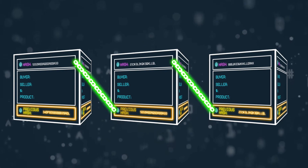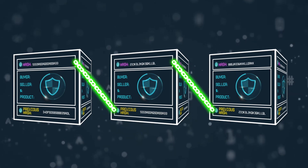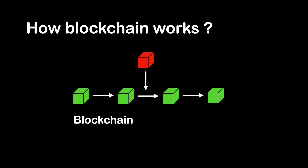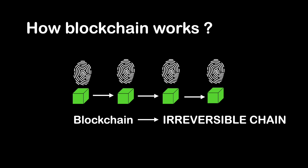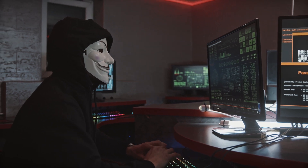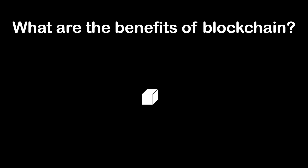As assets move from place to place or ownership changes hands, the blocks confirm the exact time and sequence of transactions. The blocks link securely together to prevent any block from being altered or inserted between two existing blocks. Transactions are locked together in an irreversible chain — each additional block strengthens the verification of the previous block, enhancing the entire blockchain and delivering the key strength of immutability. This removes the possibility of malicious actions and builds a ledger of transactions that you and other network members can trust.